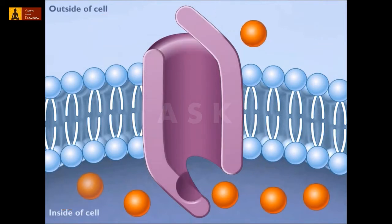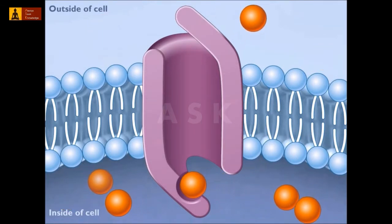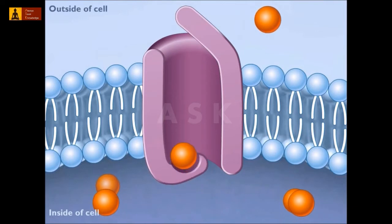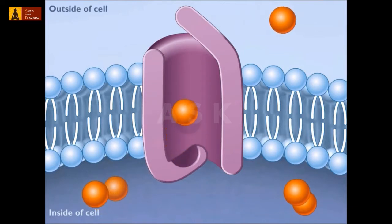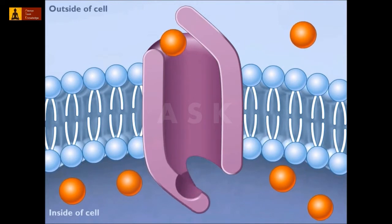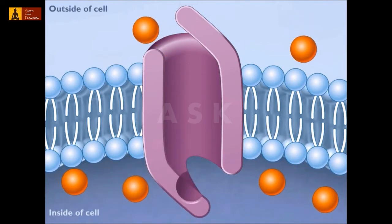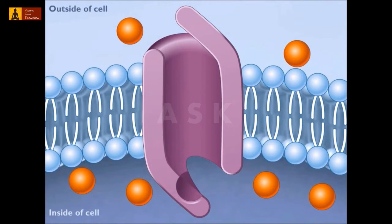Facilitated diffusion can occur in either direction depending on the concentration gradient. If there is a higher concentration of the particular molecule inside the cell, the same carrier protein would then transport the molecules out of the cell.